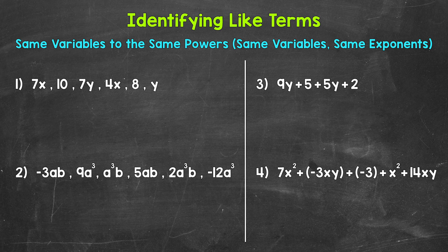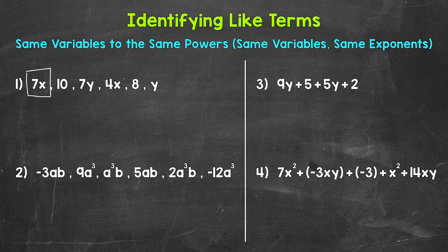Let's jump into number one where we have six terms listed. There are going to be three pairs of like terms, so everything has a matching like term here. We'll start with 7x. 7x has a coefficient of 7 and a variable of x, so we need to find another term with that variable of x. Coefficients — the numbers in front of the variables — do not matter when it comes to whether terms are like terms or not. So let's box in 7x, and the like term is going to be 4x. Both of those terms have that variable of x.